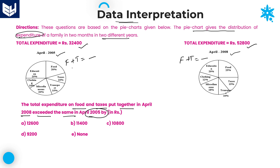First, we will calculate for 2005 — food and tax together. As we are talking about together, 20 plus 10 is 30 percentage. What is 30 percentage of 32,400? Cancelling the two zeros, you can multiply these two. You can keep the zero.